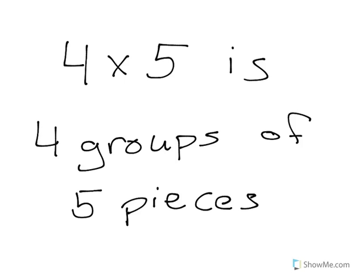For example, 4 times 5 is 4 groups of 5 pieces. The first factor, which is the 4, tells you how many groups you have, and the second factor tells you how many pieces are in each group. So you can see here again, 4 times 5 is 4 groups of 5 pieces.